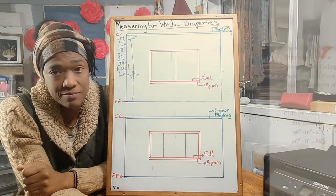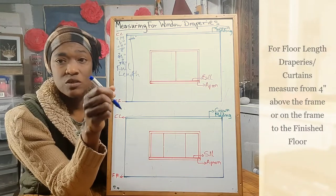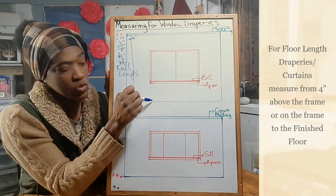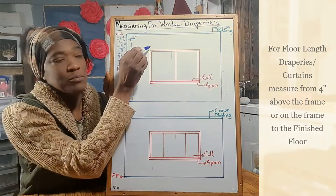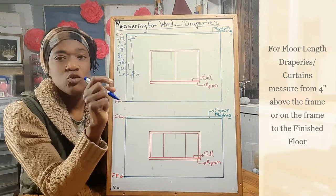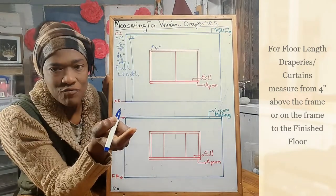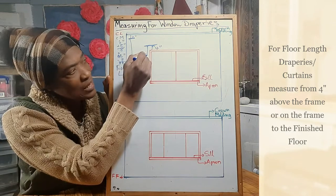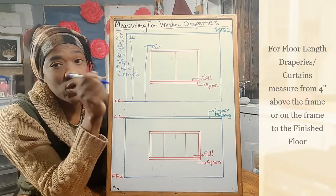Now let's look at floor length draperies. Most times floor length draperies are measured from just above the window frame to the floor, and generally speaking you would go four inches above your frame and measure from that all the way down to your finish floor — that would be your floor length draperies.